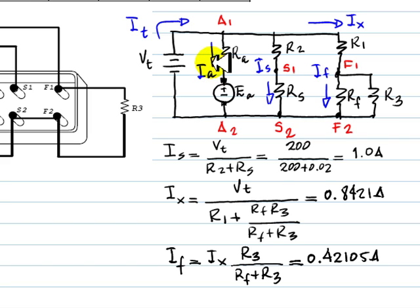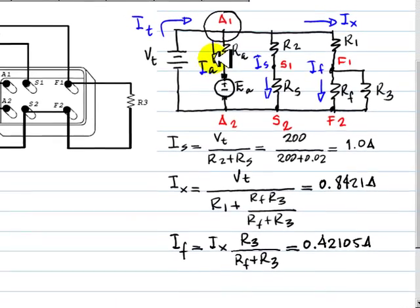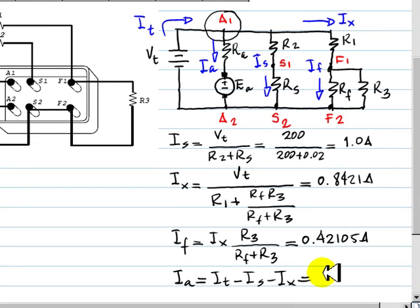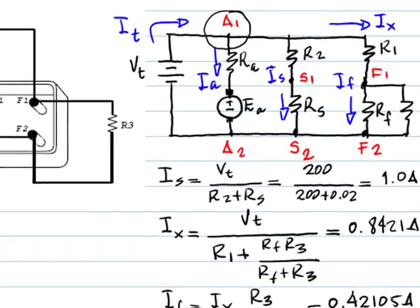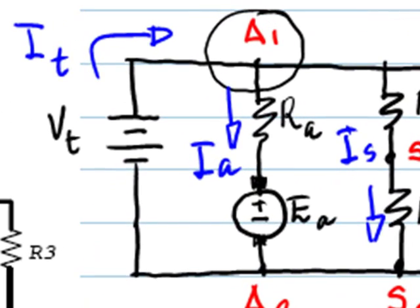We have the total current and this one IS and that IX. Of course, using KCL in this node, we can determine the missing current IA, and that is exactly what I'm about to do. That current is 98 amps with 1.6. That is the current in the armature.